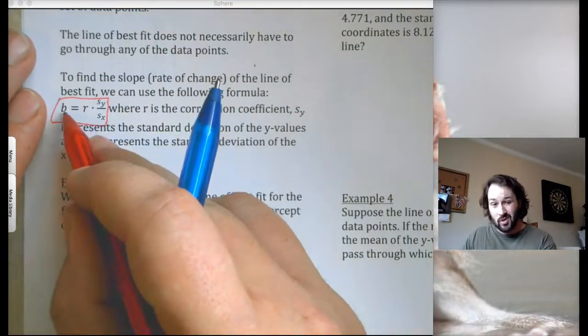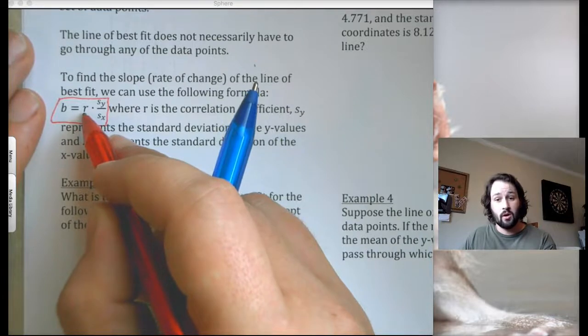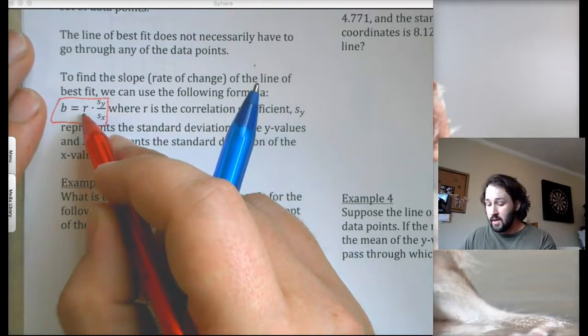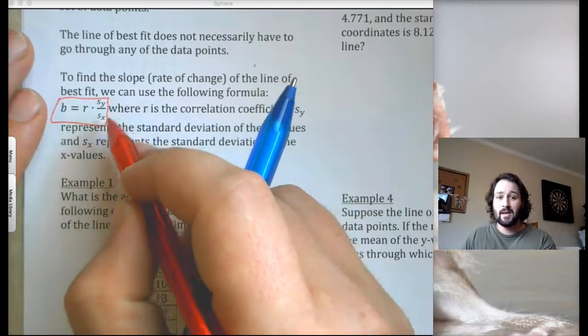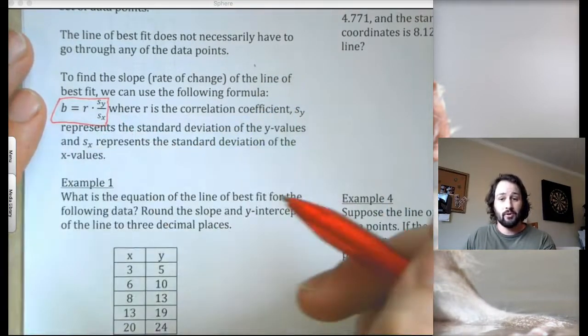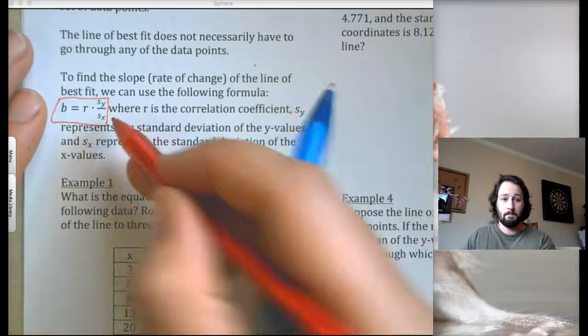But B, the slope, equals the correlation coefficient, which is what R is. I'll talk to you about that in a minute. Times the standard deviation in the Y over the standard deviation in the X. Every time they are looking for these values, they will tell you. So just make sure that you write this formula down. You will be using it.